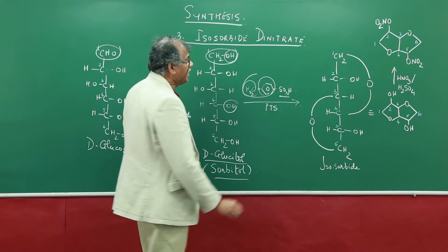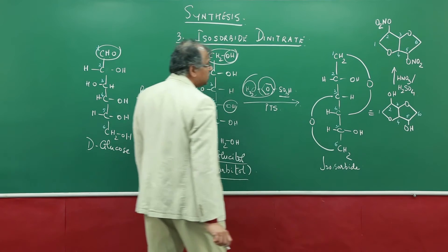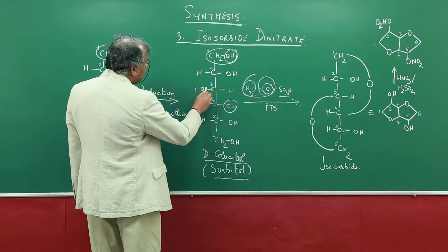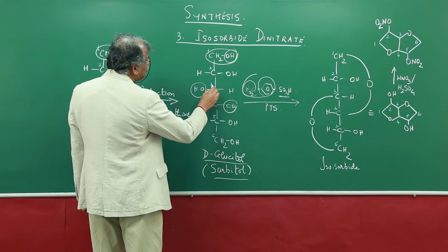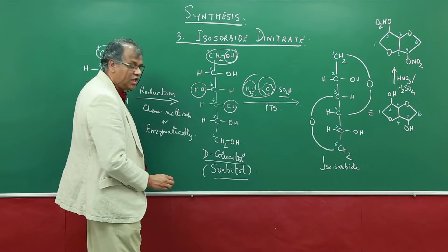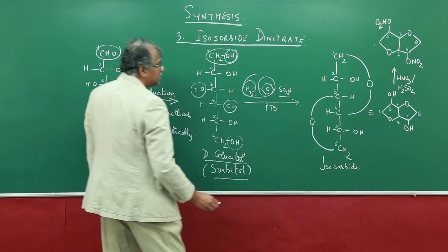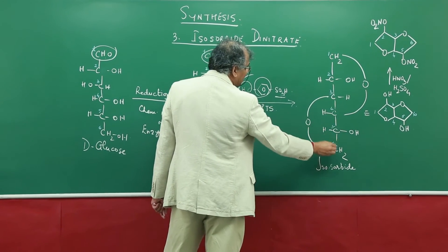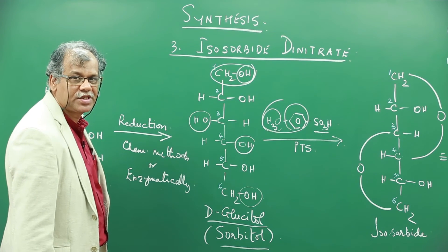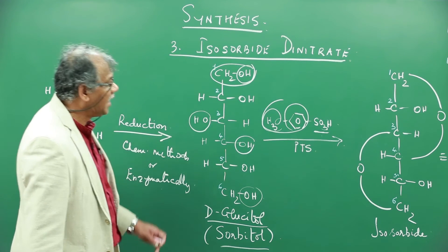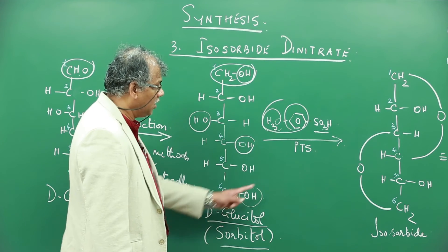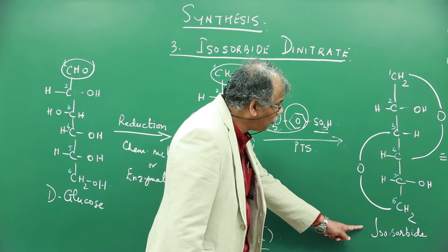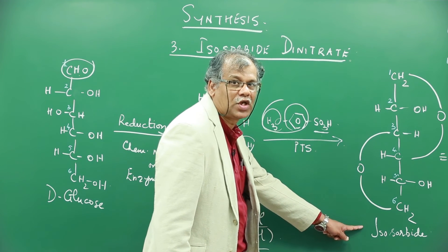Oxygen links carbon atom 1 and carbon atom 2. It also does a dehydration between the OH group at carbon atom number 3 and carbon atom number 6. So you have an oxygen now that joins up carbon atom 3 with carbon atom number 6. So two dehydrations of D-glucitol with para-toluenesulfonic acid converts it into this molecule which is called isosorbide.